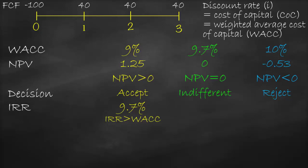In the second scenario, when WACC is 9.7 percent, our NPV is zero and our IRR is the same at 9.7 percent. Therefore, we discover that if NPV is equal to zero, IRR must be equal to WACC. In the third scenario, when WACC is 10 percent, our NPV is negative 0.53 — lower than zero — and our IRR is still 9.7 percent. So we discover that if NPV is negative, IRR must be lower than WACC.